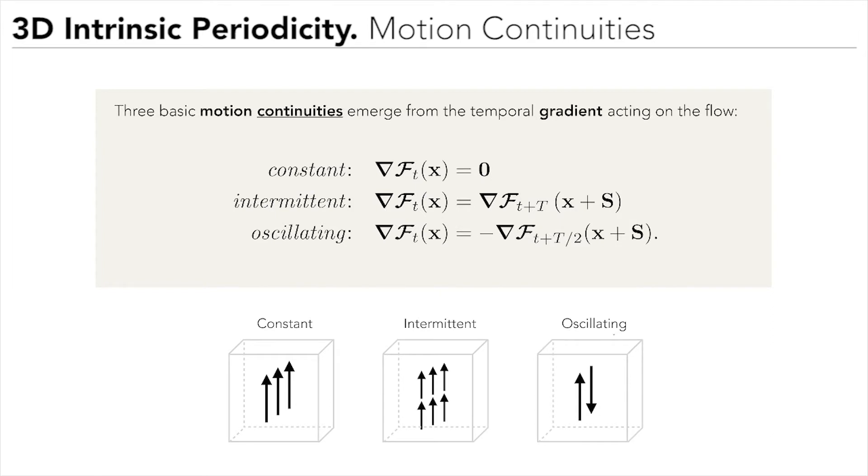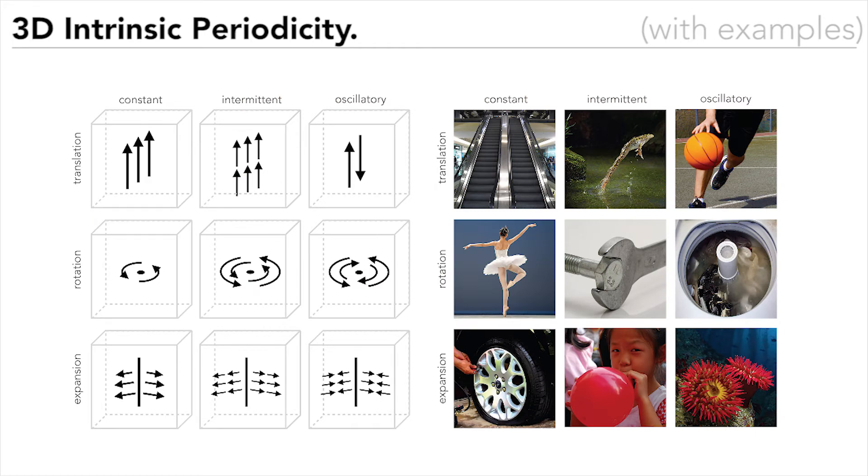And, in a similar fashion, three periodic motion continuities emerge from the temporal differential operator, being constant, intermittent and oscillating motion. Together, the motion types and motion continuities organize in a Cartesian table of nine fundamental cases of periodicity.